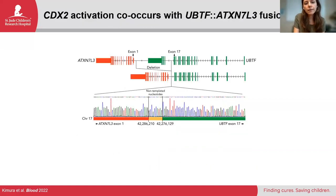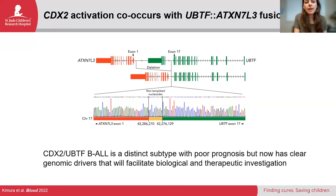All of these cases also harbor another genomic alteration: a fusion gene between UBTF and ATX and 7L3. We were able to identify these two new genomic alterations in this group, which was simultaneously characterized by two other groups. These patients have particularly poor outcomes, so it's been really good to identify the driving alterations so we can start to investigate new therapeutic options.